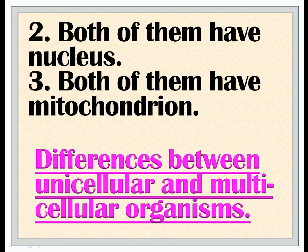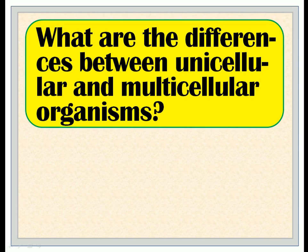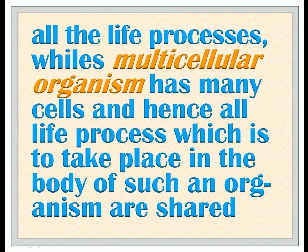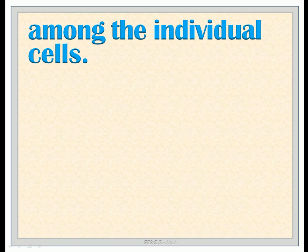Differences between unicellular and multicellular organisms. Unicellular organism is composed of one cell, which it uses to perform all the life processes, whilst a multicellular organism has many cells, and all life processes which take place in the body of such an organism are shared among the individual cells.